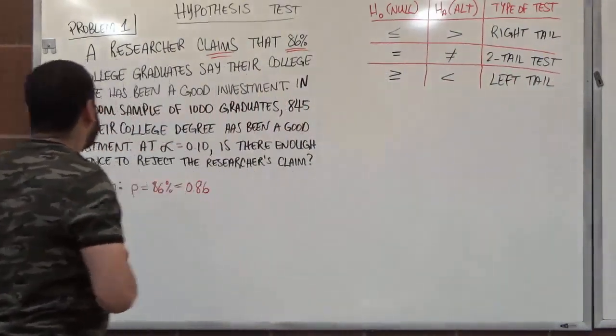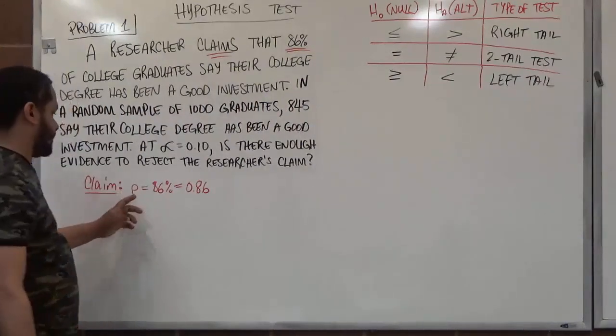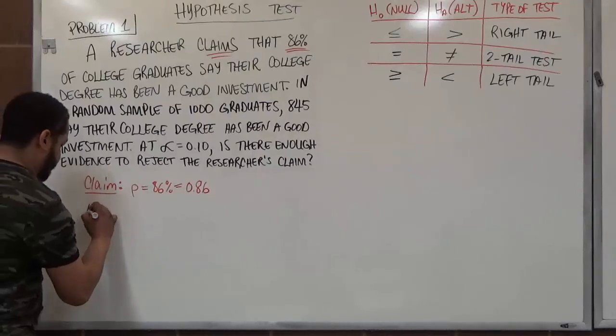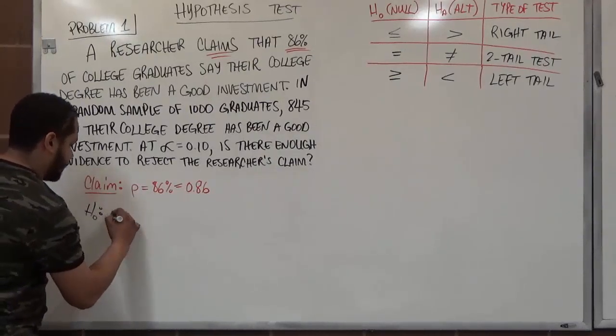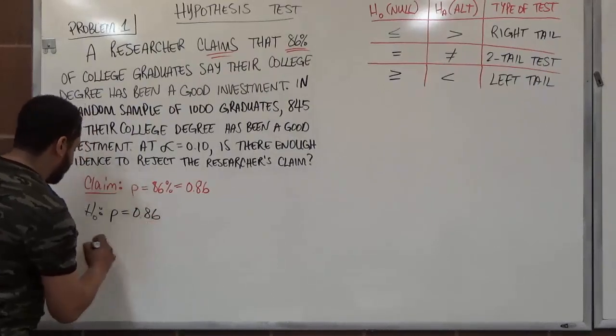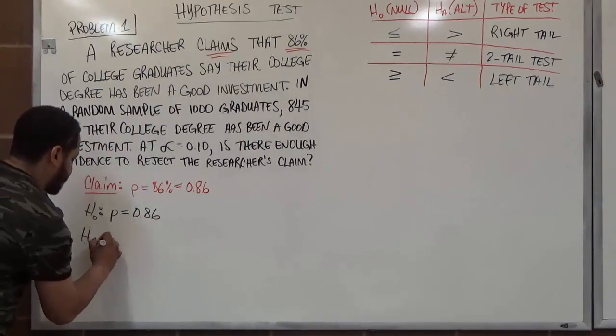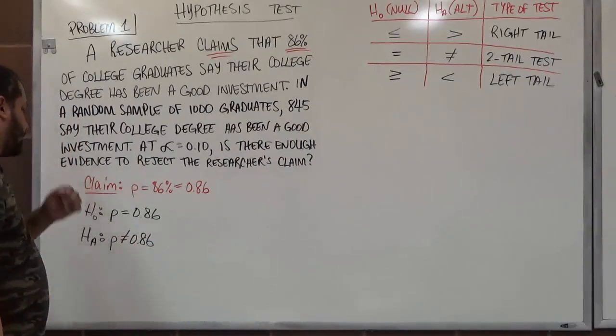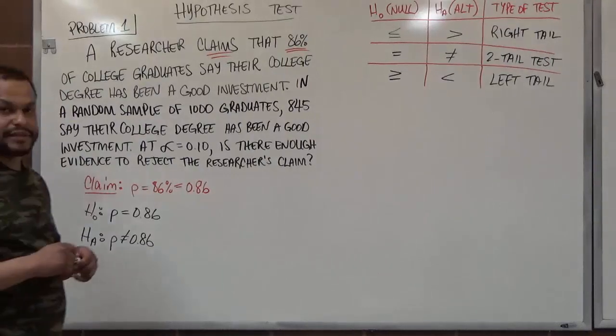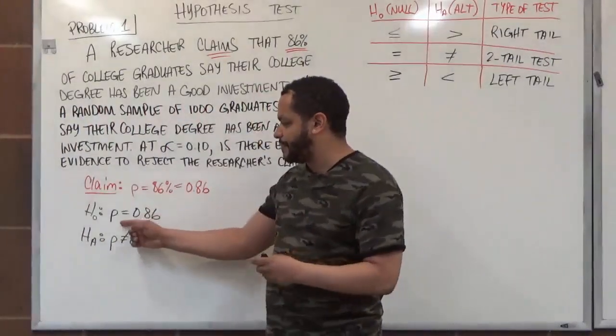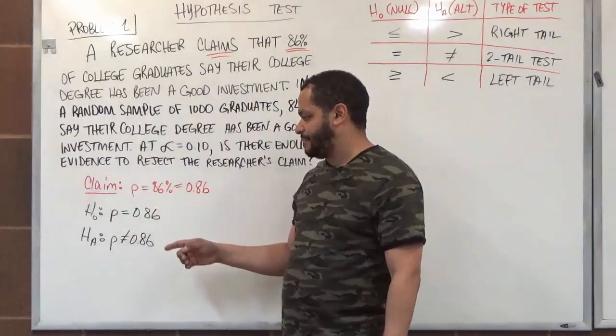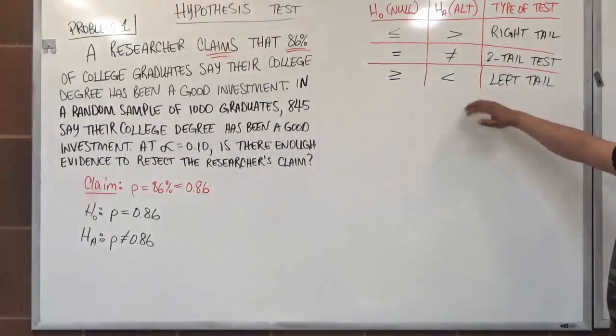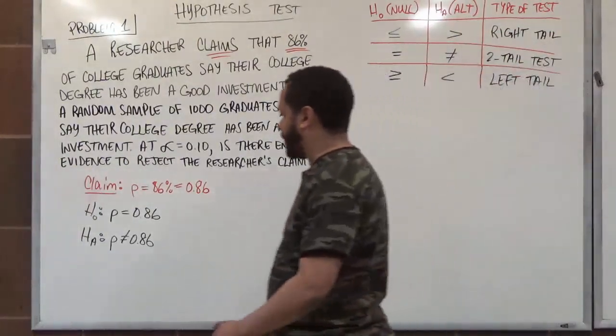In our case here, we have the claim says the p-value, the proportion is 0.86. So this becomes our null hypothesis. So we have p is equal to 0.86. Our alternative hypothesis, the counterargument will say the proportion is not 0.86. So there we have our first three steps to this hypothesis testing. We have our claim, we have our null hypothesis, which is generated from the claim, and our alternative hypothesis, which is also generated from the claim using this table. Make sure you make a note of this. This will help you through all your hypothesis testing.